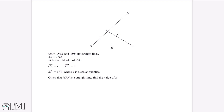OAN, OMB and APB are straight lines. AN is equal to 2OA. M is the midpoint of OB. OA equals vector A, OB equals vector B, and AP equals K times AB, where K is a scalar quantity. Given that MPN is a straight line, find the value of K.